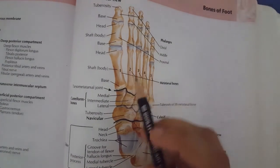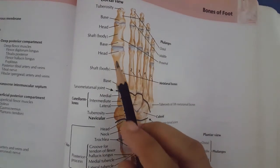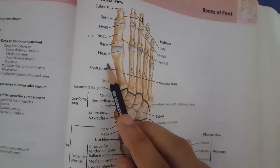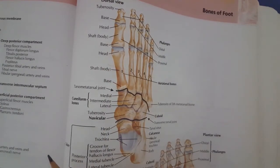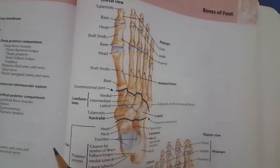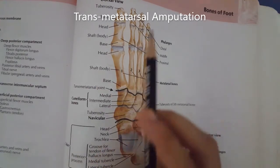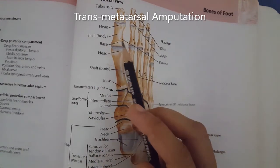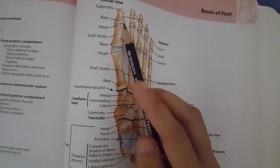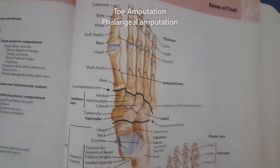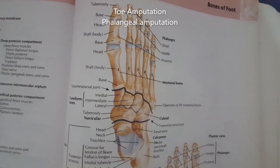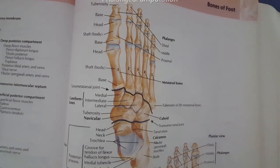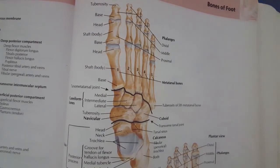The next amputation we can do is through the metatarsal bones, called transmetatarsal amputation. Then we can do amputation at the phalangeal joints, which is called toe amputation or phalangeal amputation.